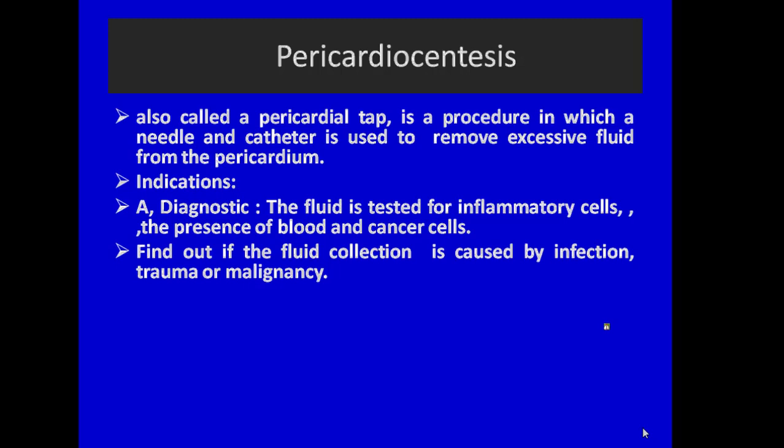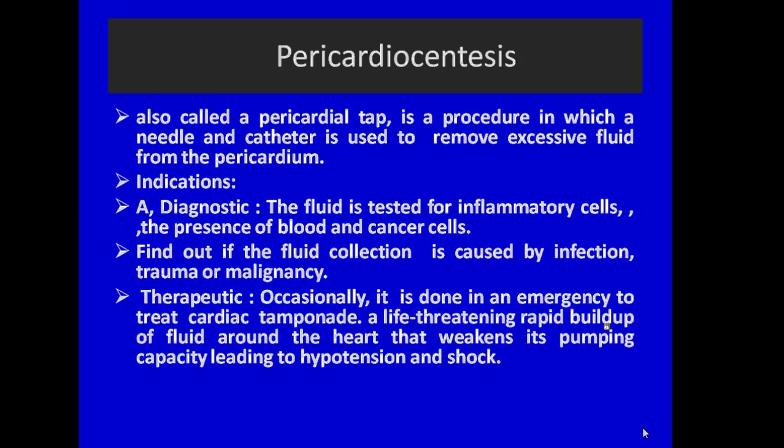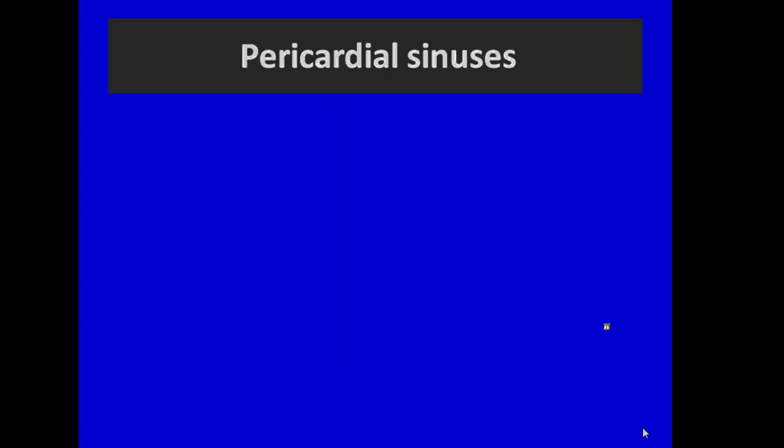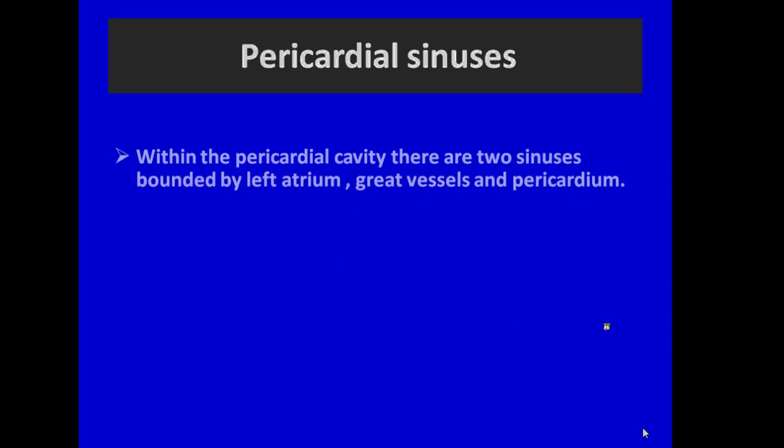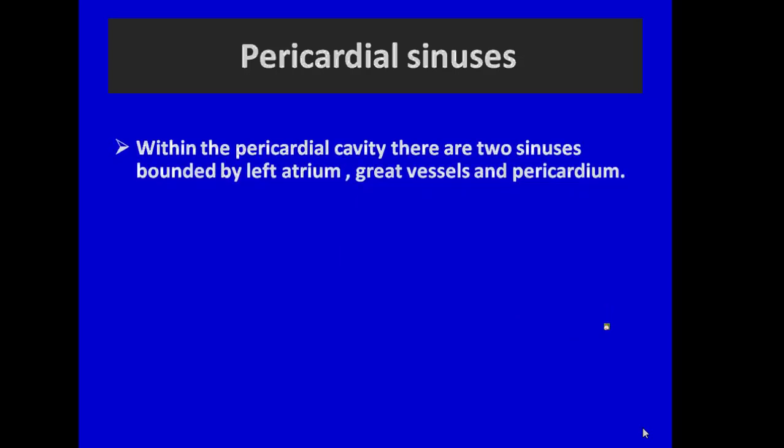The indications for pericardiocentesis are diagnostic — the fluid is tested for inflammatory cells, blood cancer cells, and cancer cells to determine if the collection is caused by infection, trauma, or malignancy — and therapeutic, done in emergency to treat cardiac tamponade, a life-threatening rapid buildup of fluid around the heart that weakens its pumping capacity, leading to hypotension and shock.